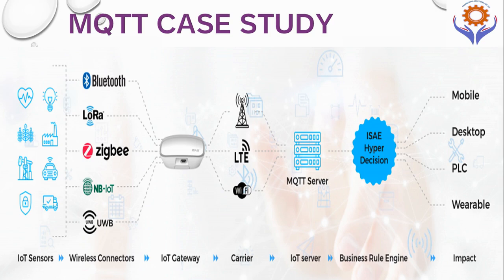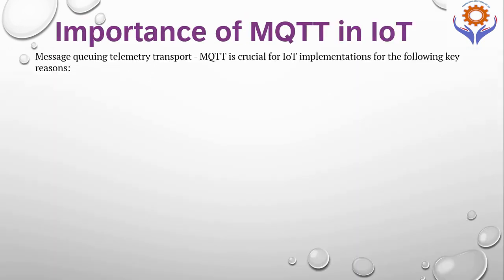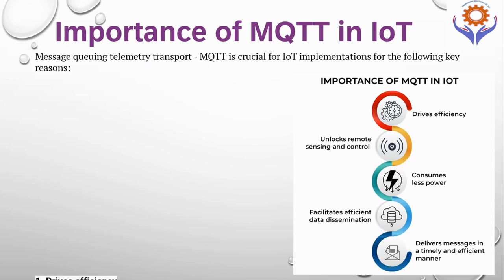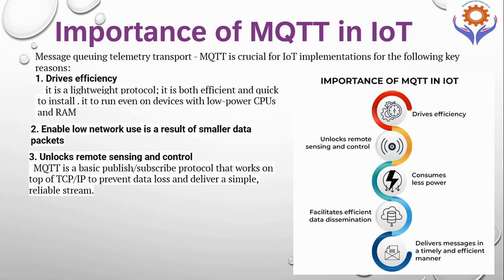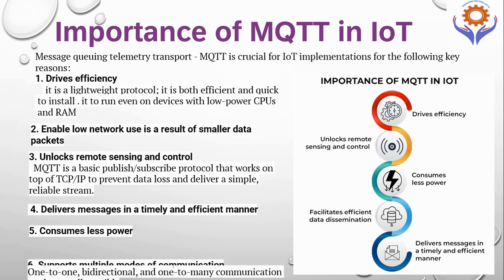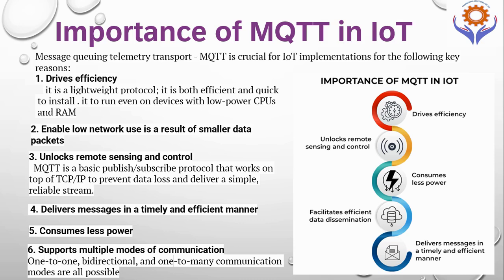The importance of MQTT in IIoT covers several major roles. First, it drives efficiency as a lightweight protocol — it is both efficient and quick to install, and runs even on devices with low-power CPUs and RAM. Second, it enables low network use, resulting in smaller data packets. Third, it unlocks remote sensing and control — MQTT is a basic publish-subscribe protocol working on top of TCP/IP to prevent data loss and deliver a simple, reliable stream in a timely and efficient manner. Additionally, it has very low power consumption and supports multiple modes of communication: one-to-one, bi-directional, and one-to-many.